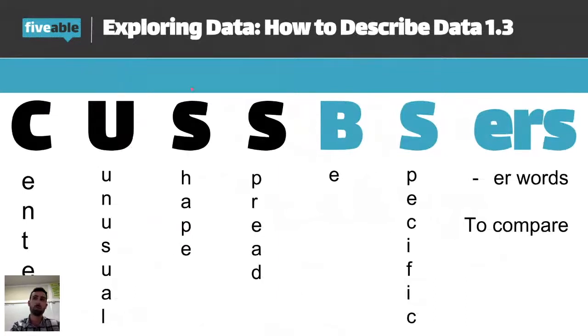Next is the shape. So as we get all this data and we display it, what does it look like? What's the actual shape? And then the spread. So how spread out is our data? Is it really concentrated in one place or is it pushed out and spread very far? So that's the four things you need to describe the distribution.